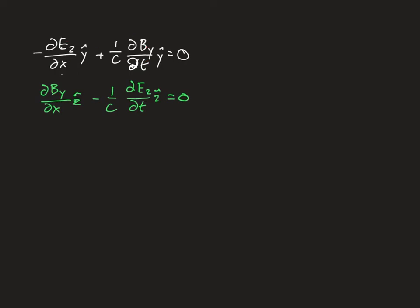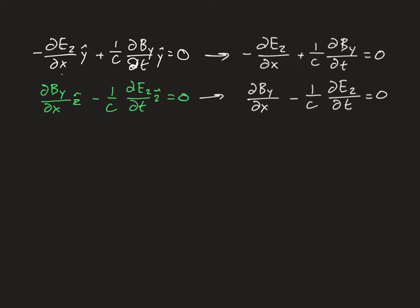Since if a vector in the y direction vanishes it's clear the scalar component also vanishes, I can divide out the unit vectors and show that each scalar equation must equal zero on its own. So let's remove the reference to the vector nature of these equations. The pattern should become more obvious: we have only a y component of B and only a z component of E, with a time derivative on one and an x derivative on the other, the equations very similar except for a sign difference.